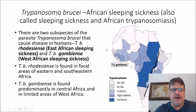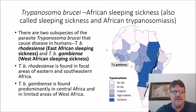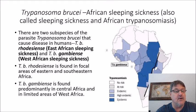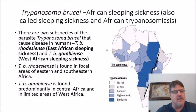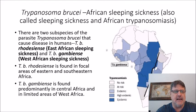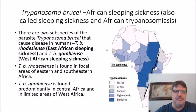First, I want to talk about Trypanosoma brucei. This is the causative agent of African sleeping sickness, also known as African trypanosomiasis. There are two subspecies of this parasite: Trypanosoma brucei rhodesiense, which is the cause of East African sleeping sickness — a more rapid, acute, fatal type of infection — and Trypanosoma brucei gambiense, which causes West African sleeping sickness. As you can venture from the titles, they're differentiated a lot on geography.